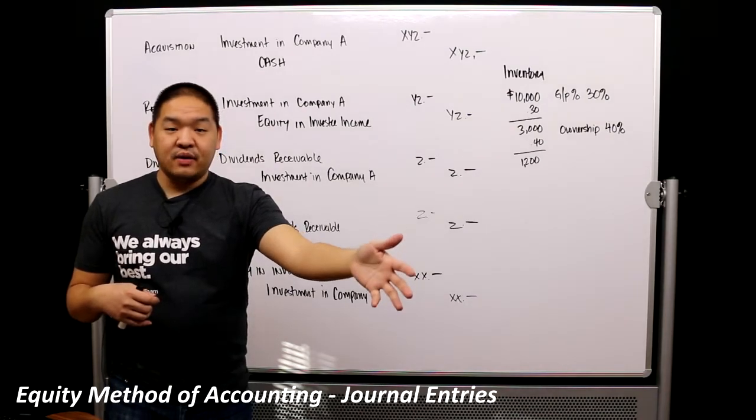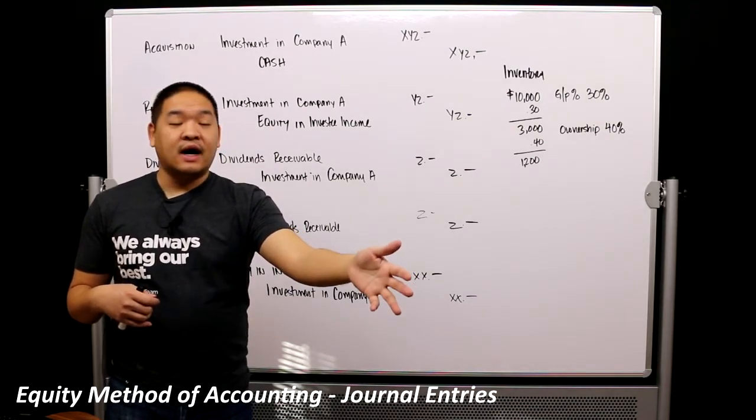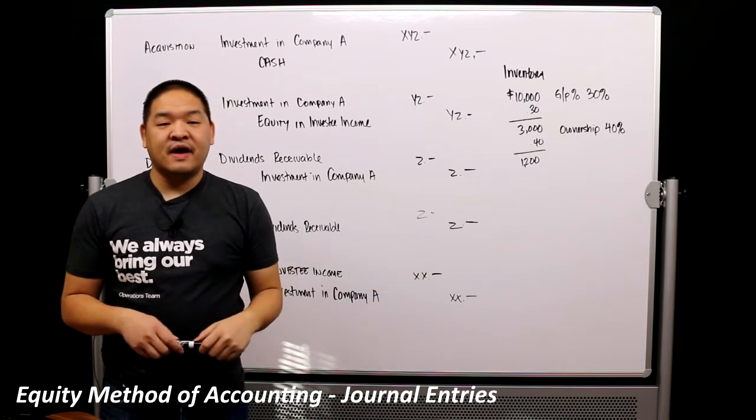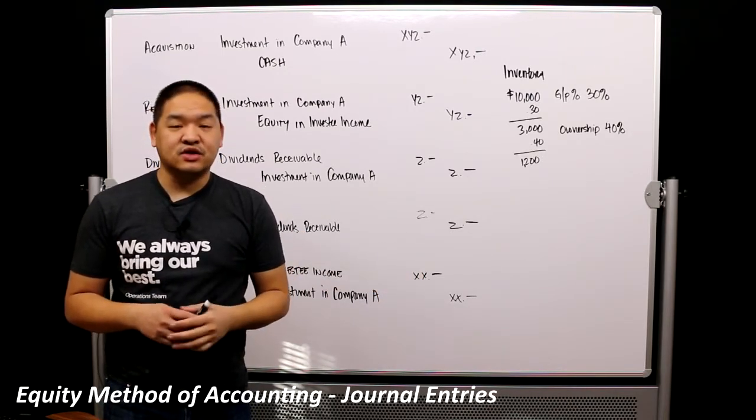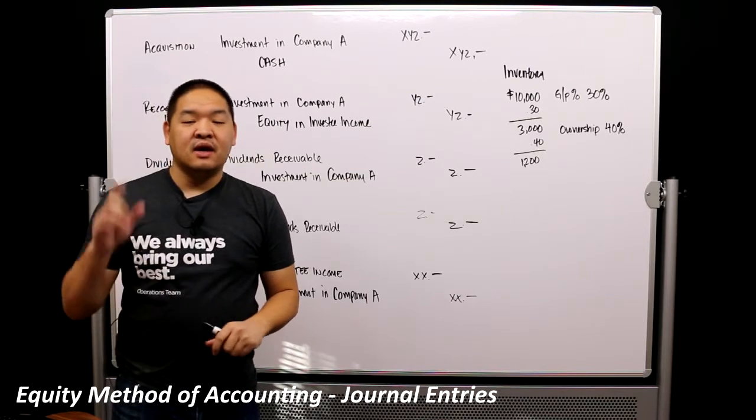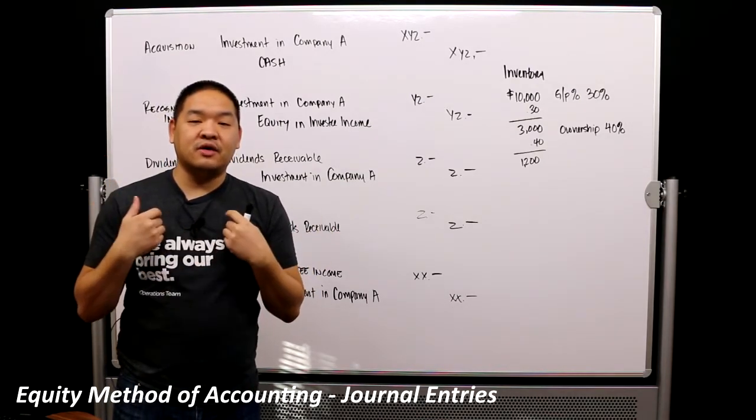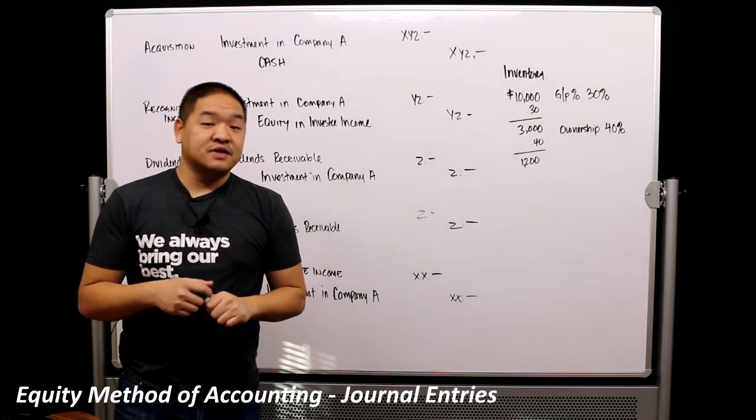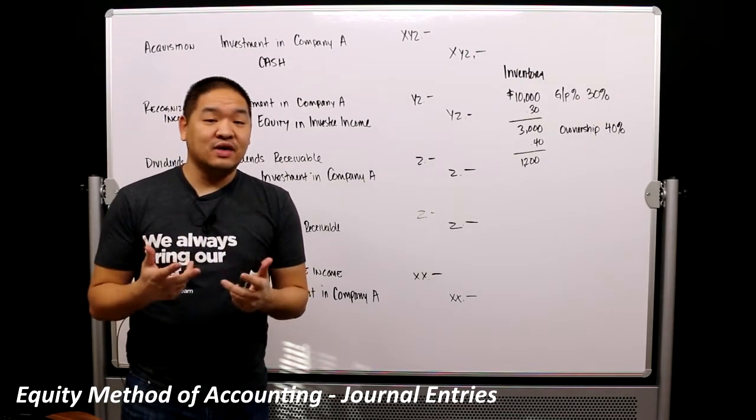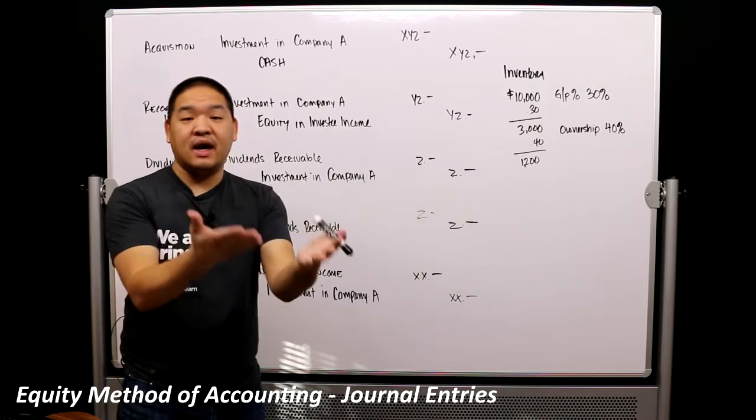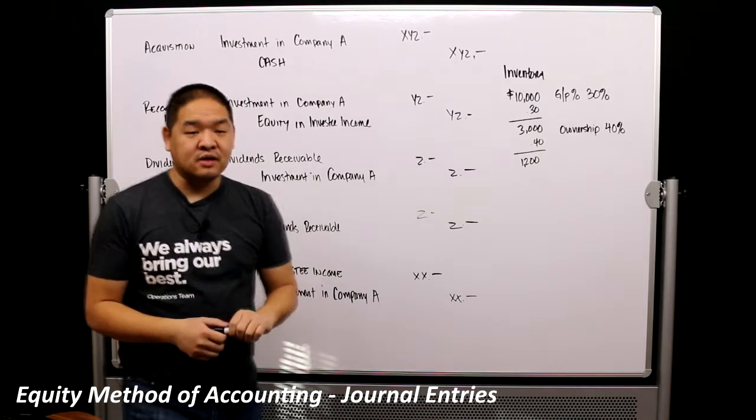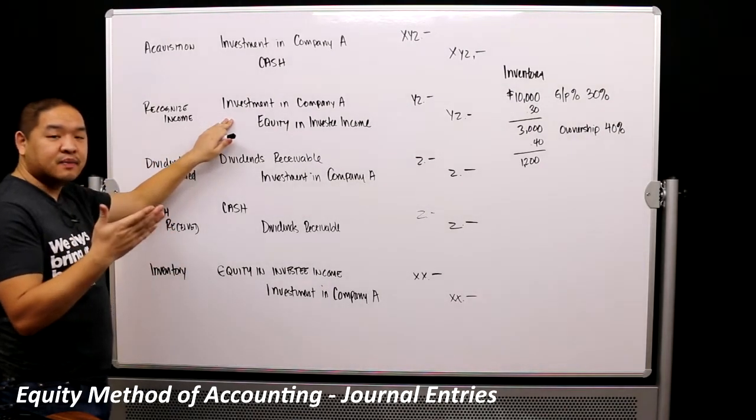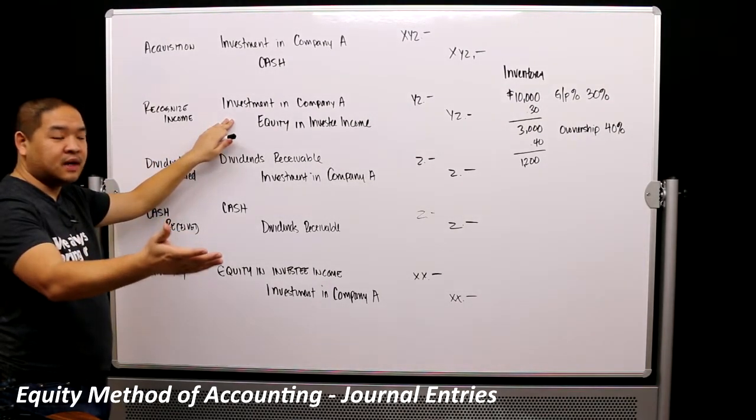Company A does $100,000 of net income, then we would book $25,000, and the way we would get $25,000 is we would take $100,000 of its net income multiplied by our ownership of 25%, and we would get $25,000. So we would book an increase in our investment in Company A by $25,000. Investment in Company A increases. It increases because we had net income proportional to our ownership of Company A.